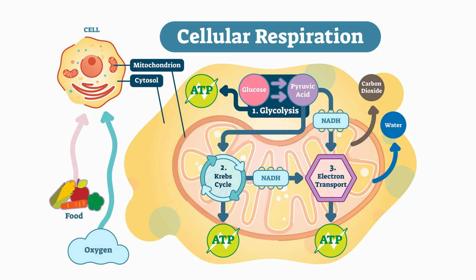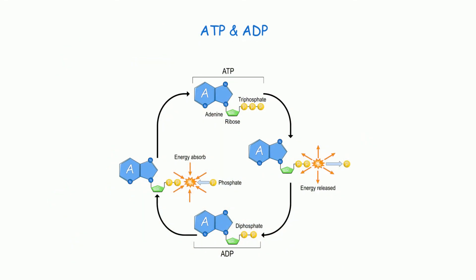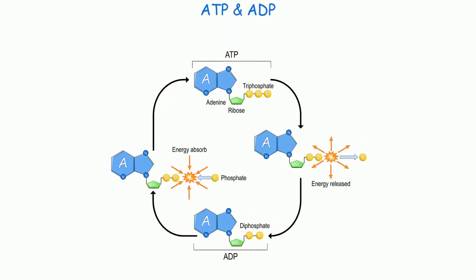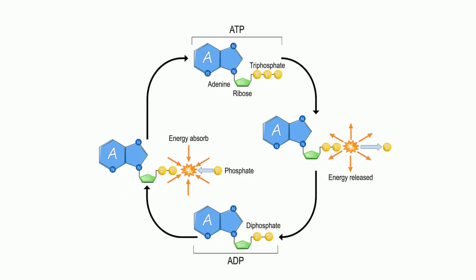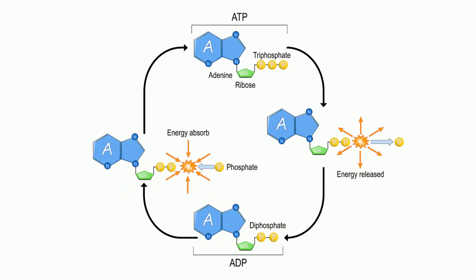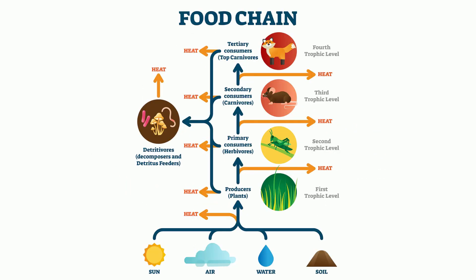Heterotrophs use the glucose from other organisms in order to produce ATP in a process called cellular respiration. In turn, the ATP is converted into energy.